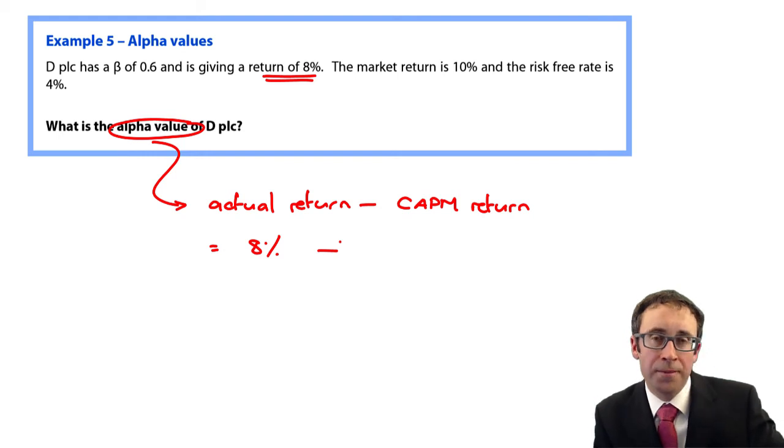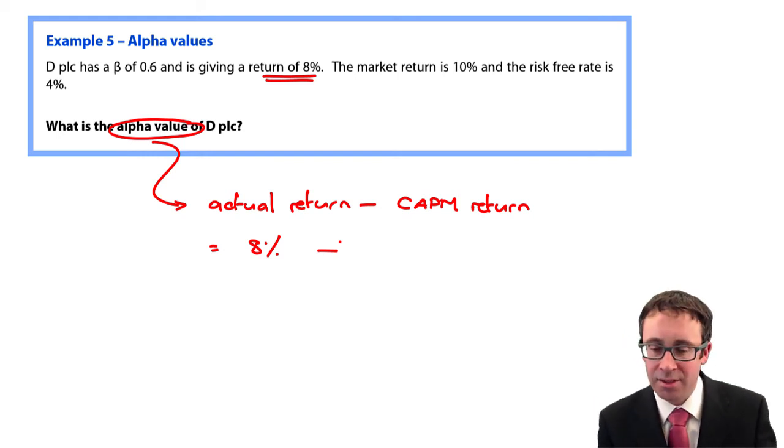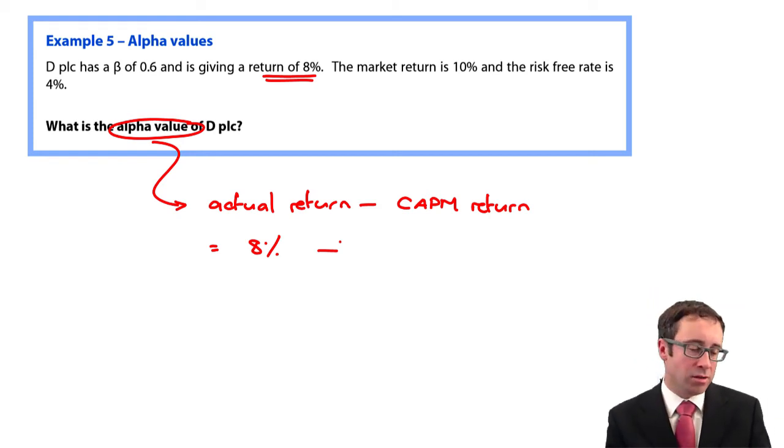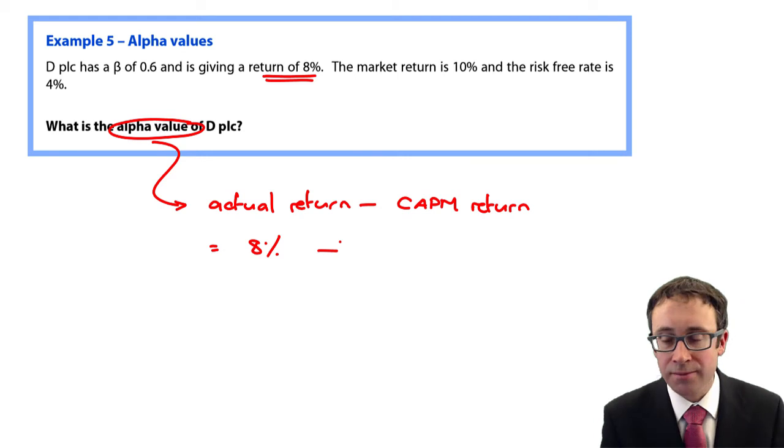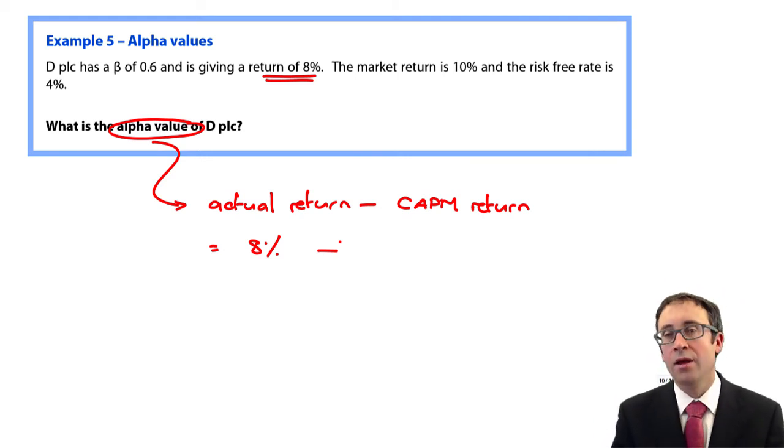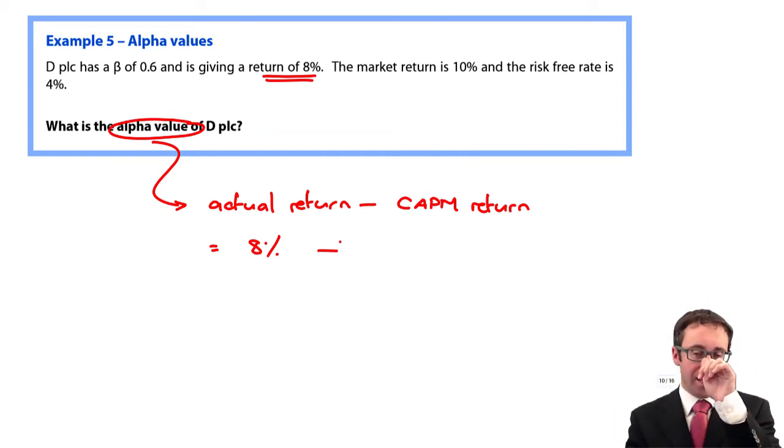Is that beta right? Don't know. It's an estimate. The market return 10%. Again, that's based on history and into the past. The risk free rate is possibly what we know with the most certainty, the easiest one to get. But what it means is that the estimate that we work out is different to ultimately that 8% that we are actually getting.